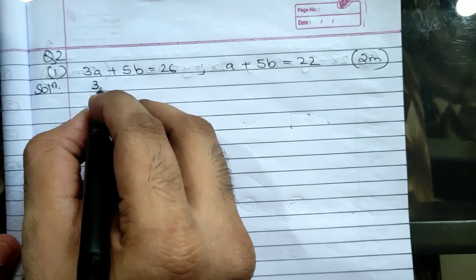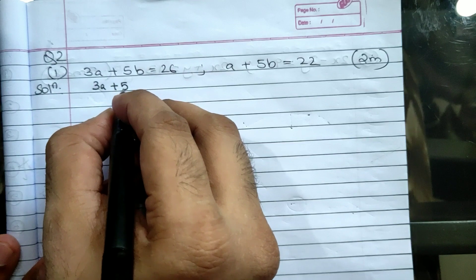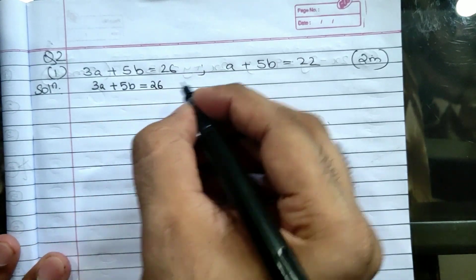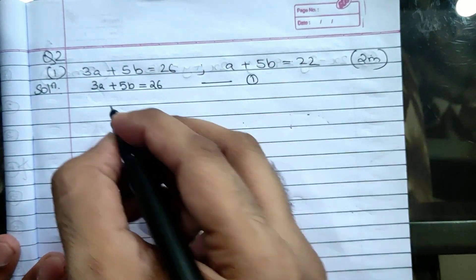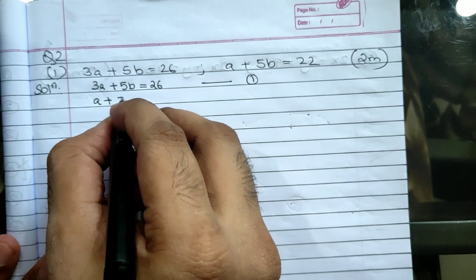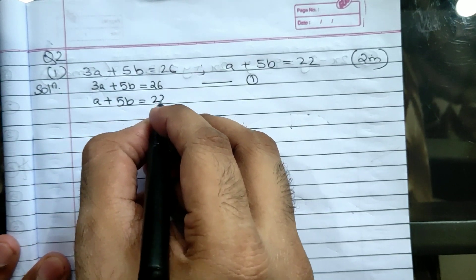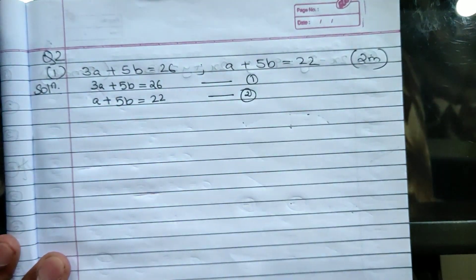Solution - first step, you will write this equation as it is. 3a plus 5b equals 26, this is my equation number 1. a plus 5b equals 22, this is my equation number 2.